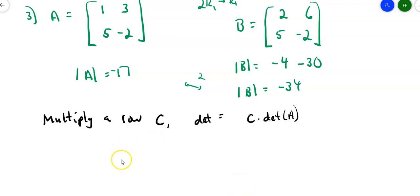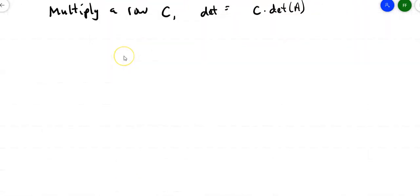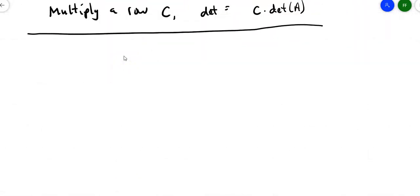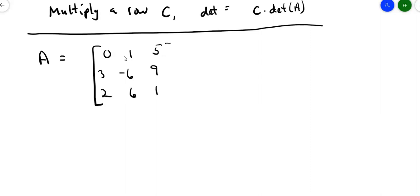If you know how to do elementary row operations and keep track of what you did, you can actually find the determinant another way. Let's start with matrix A as this 3×3 matrix: [0, 1, 5; 3, -6, 9; 2, 6, 1]. The first thing I'm going to do is flip row 2 and row 1. When I do that, I also pull out a negative 1 because interchanging rows changes the determinant's sign. So the determinant will be -1 times the new determinant.